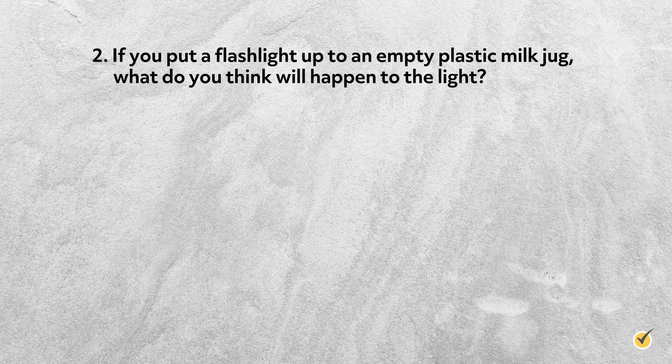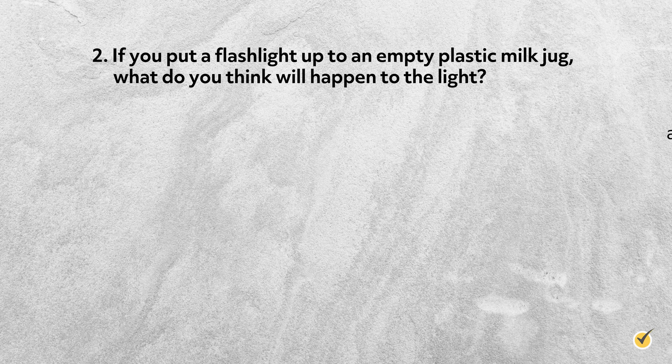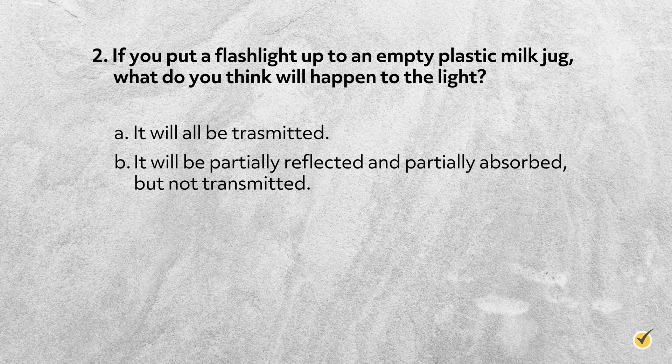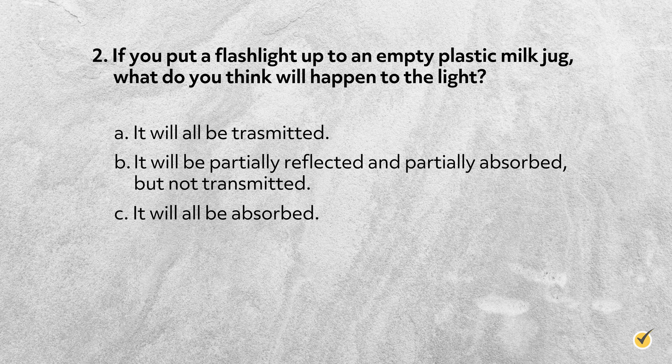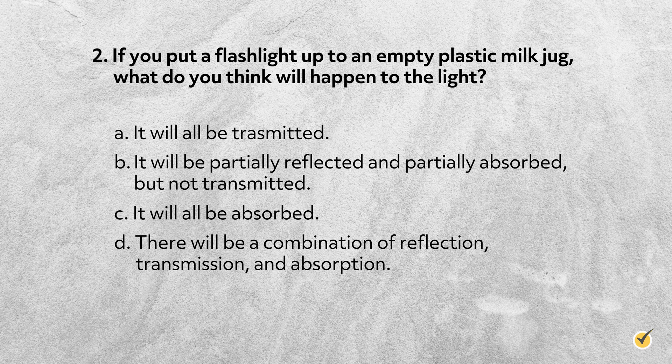Number two: If you put a flashlight up to an empty plastic milk jug, what do you think will happen to the light? A: It will all be transmitted. B: It will be partially reflected and partially absorbed, but not transmitted. C: It will all be absorbed. Or D: There will be a combination of reflection, transmission, and absorption.